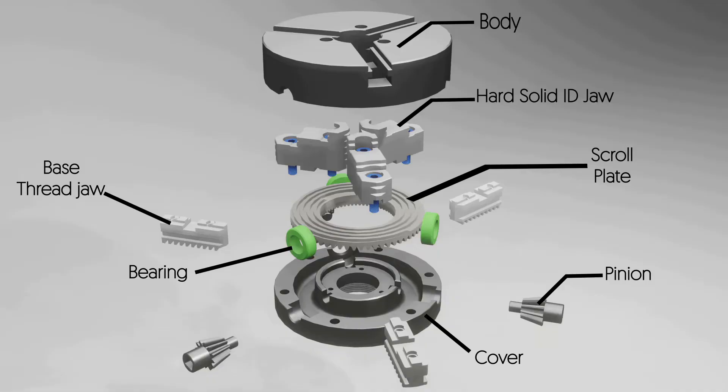Cover: it is the base of the chuck which attaches to the lathe machine. The cover is the part that attaches to the main spindle of the lathe machine.